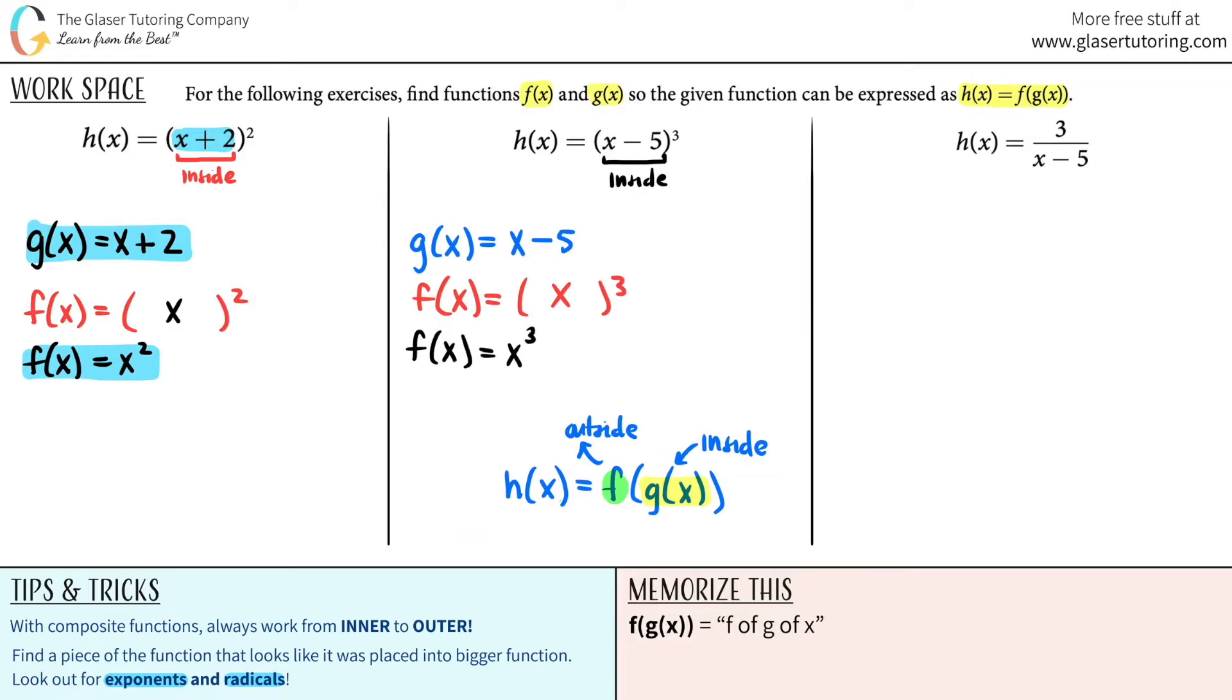f of x was now x cubed. And that's it. Those are your two functions. The first one, g of x being x minus 5. That was the inner one. And then x cubed was f of x. That was the outer one. There you go. Two down. Let's do one more.